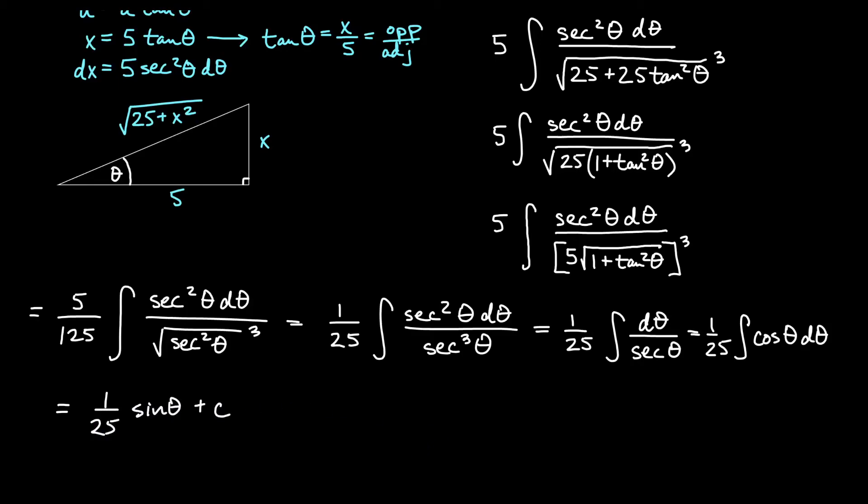And then we'll go back to our triangle here. And we'll notice that, remember, sine of theta is equal to the opposite over the hypotenuse. And in this case, that is going to be x over the root.